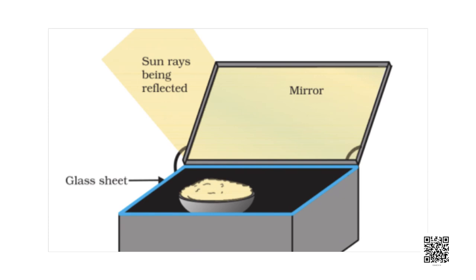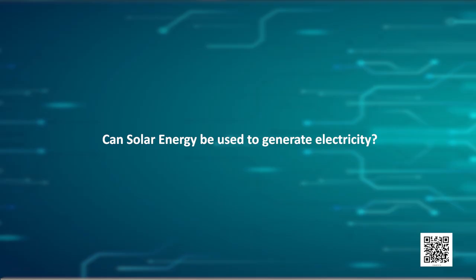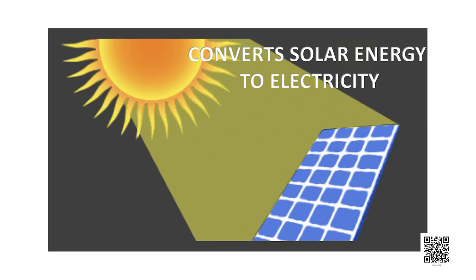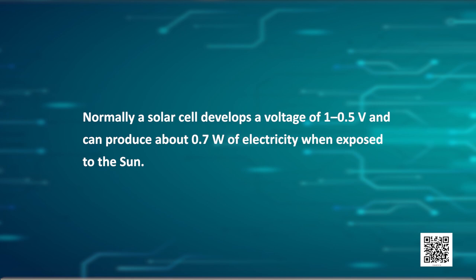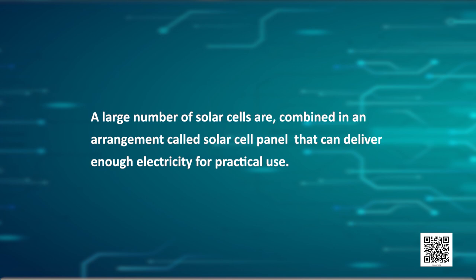So the interior of the box remains heated, which helps to cook the food. Can solar energy be used to generate electricity? The answer is yes. Solar cells are devices that convert solar energy into electrical energy. Normally, a solar cell develops a voltage of about 0.5 to 1 volt and can produce about 0.7 watt of electricity when exposed to the sun. A large number of solar cells are combined in an arrangement called a solar cell panel that can deliver enough electricity for practical use.